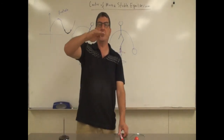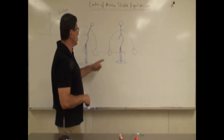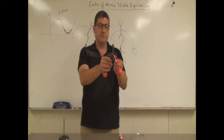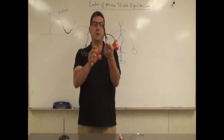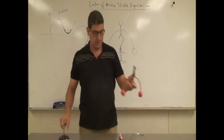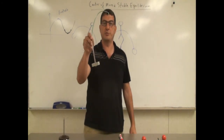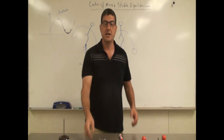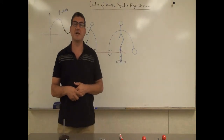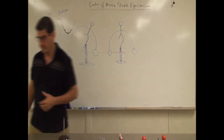Any point where the potential energy is at its maximum is unstable equilibrium. But in these two cases — with the person and with this demo — this is stable equilibrium; you can balance it and see how it oscillates. So you can see here the concept of center of mass and its connection to stable versus unstable equilibrium. Thank you very much.